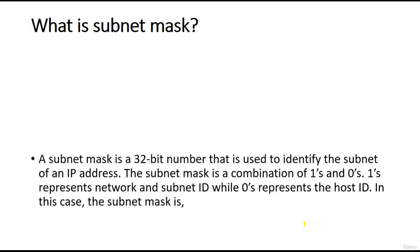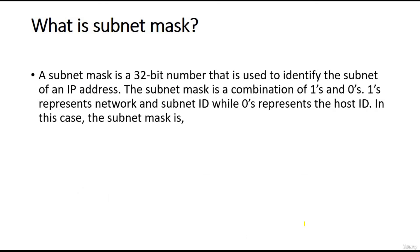What is a subnet mask? A subnet mask is a 32-bit number used to identify the subnet of an IP address. It is 32 bits because every octet has 8 bits and there are 4 octets, so 8 multiplied by 4 equals 32.